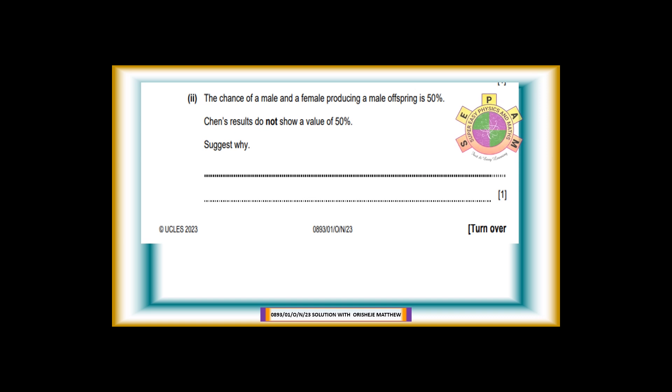8b-2: The chance of a male and a female producing a male offspring is 50%. Chen's results do not show a value of 50%. Suggest why. For 1 mark. Answer: The repetition is not enough to be reliable. He did not use all the balls.